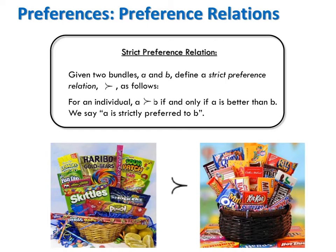Rankings might be described by a strict preference relation. That is, given two bundles A and B, we define a strict preference relation as follows: for an individual, we say that bundle A is strictly preferred to bundle B if and only if the person likes A more than B.